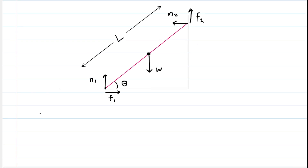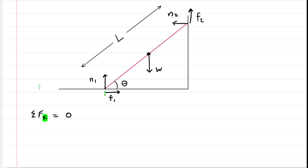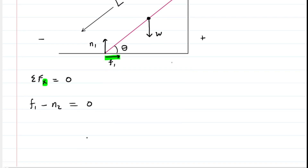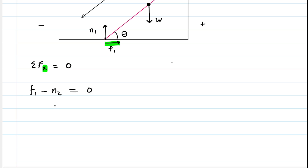Next we apply Newton's second law in the x direction. The sum of the forces in the x direction equals zero because the ladder is in equilibrium. The forces acting in x are F1 and the normal force N2. Assuming right is positive and left is negative, we have F1 minus N2 equals zero. Isolating N2 shows that N2 has the same magnitude as F1.